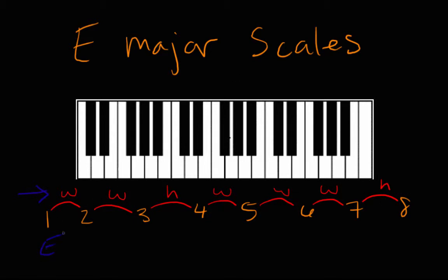So the first note is going to be E. Let's write E right over here. And then to get to the second note, we go a whole step from E. A whole step from E is going to be F sharp — we're going from E to F, up to F sharp. So we know the second note in the E major scale is F sharp. Now to get to the third note, we go a whole step up from F sharp — from F sharp to G to G sharp. So the third note in the E major scale is G sharp. Then we go from the third note to the fourth note by traveling a half step. From G sharp, we travel a half step and we find ourselves at A. And A is the fourth of E.